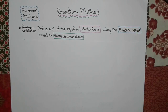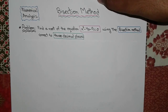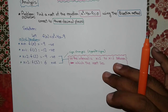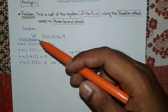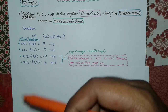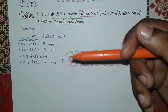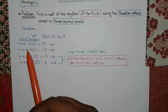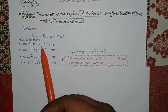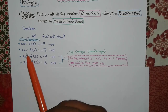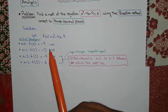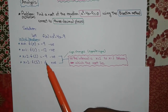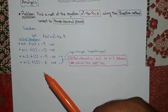When starting the problem, we first have to find the interval in which the root lies. For that, we do some initial iterations starting from x = 0 up to x = 3. We can see that when x = 0, f(0) = -9, which is negative. When x = 1, f(1) = -12, also negative. When x = 2, f(2) = -9, still negative.